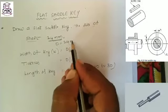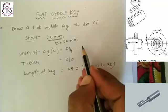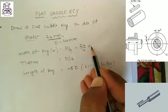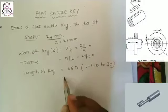Then D equal to 24 mm. D means shaft diameter. Please substitute D in width formula, thickness formula, and length formula.